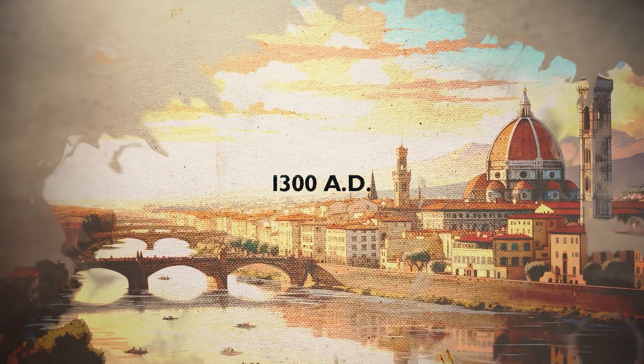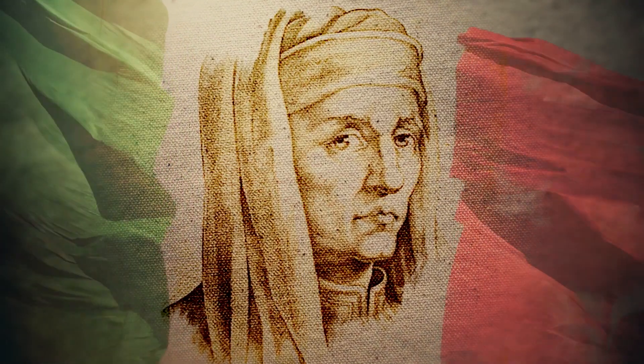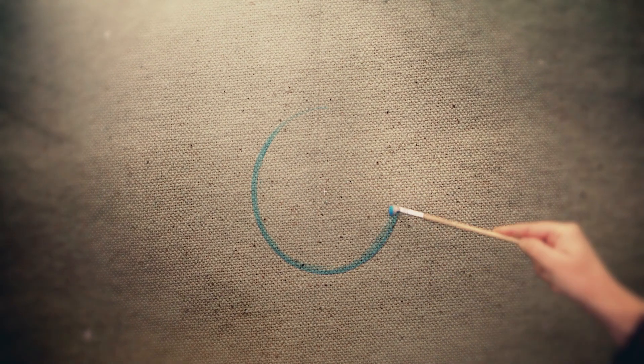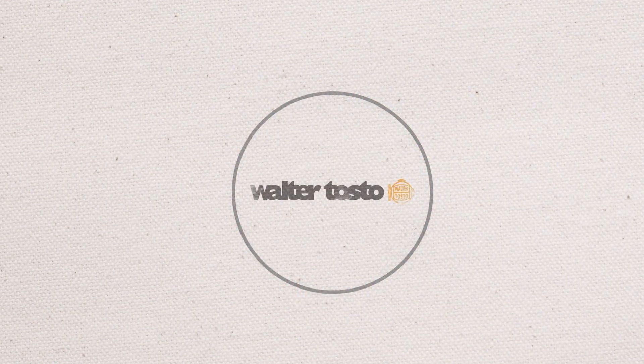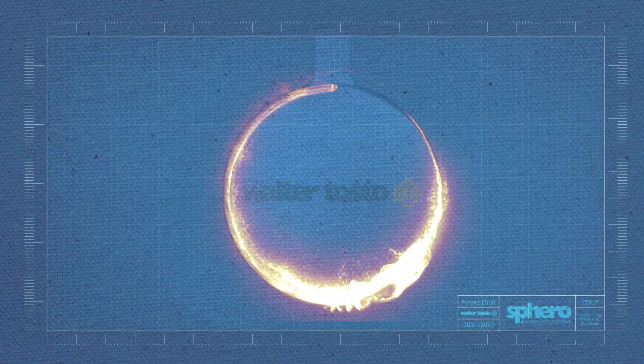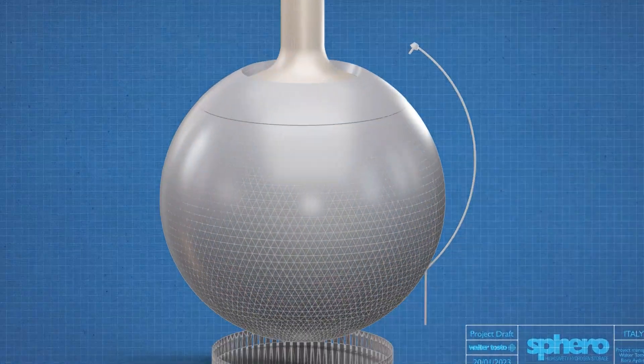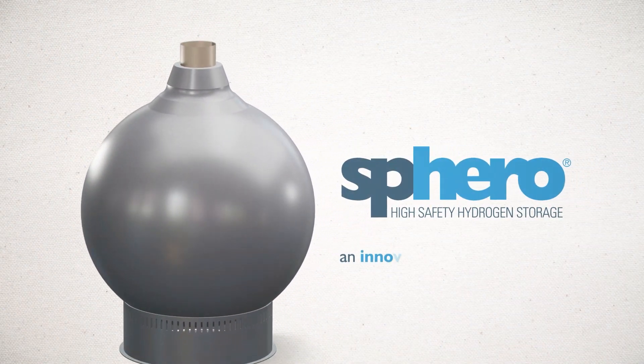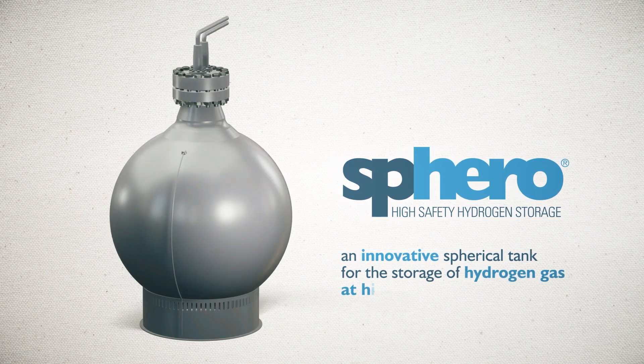More than 700 years ago, Giotto, a famous Italian painter and architect, demonstrated his skills by drawing a perfect circle on a canvas. Today, Walter Tosto uses the same geometric perfection to revolutionize this storage market, designing Sphero, an innovative spherical tank for the storage of hydrogen gas at high pressure.